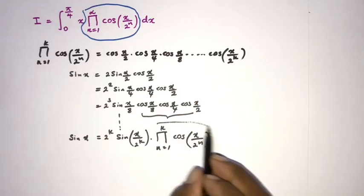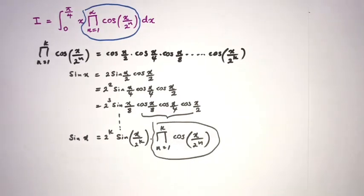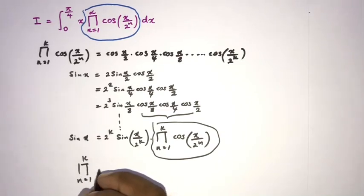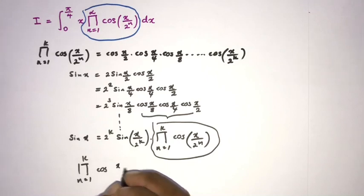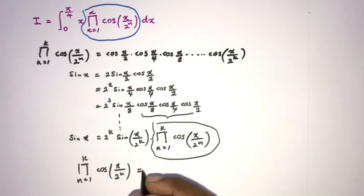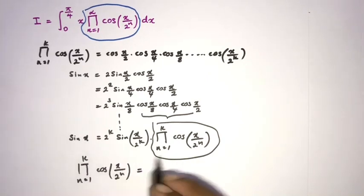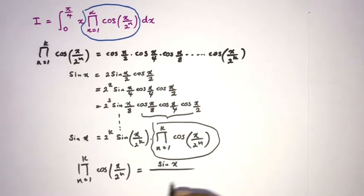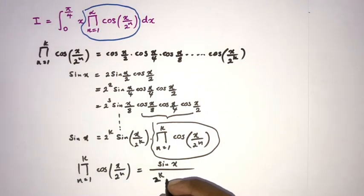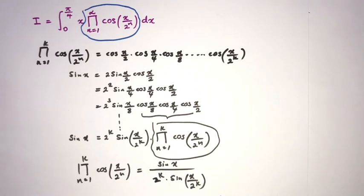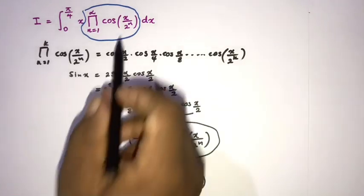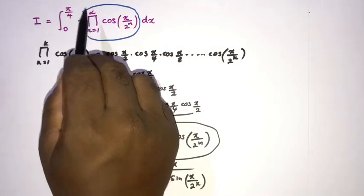Now we can isolate this product. We write the product from n equals 1 to k of cosine of x over 2^n equals sine of x divided by 2^k times sine of x over 2^k. Now we need to take this to the infinite product, so we apply the limit as k approaches infinity.